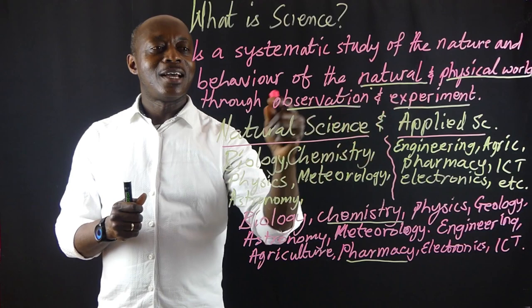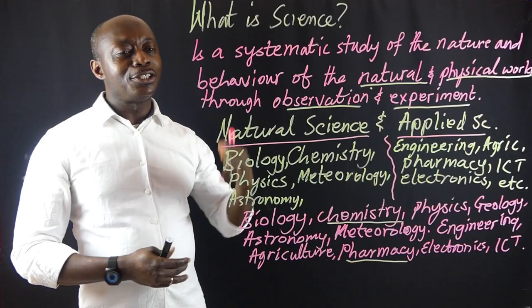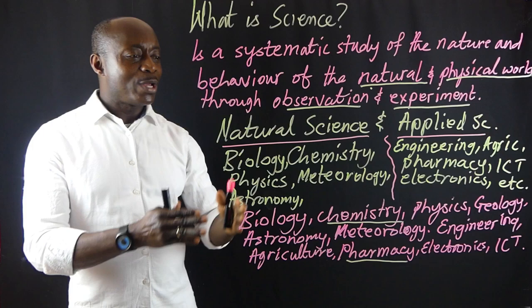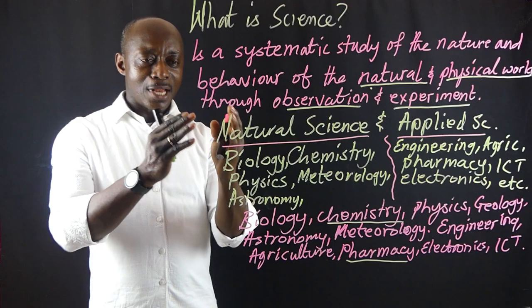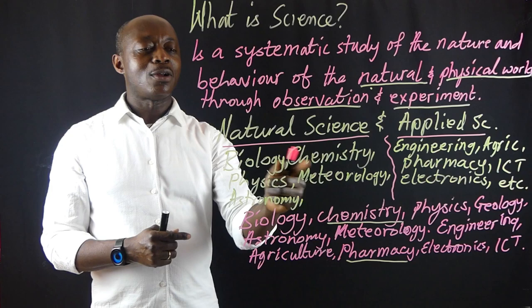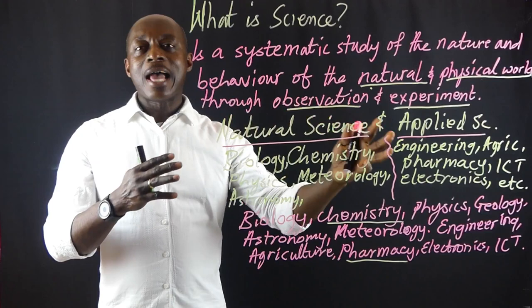Scientific subjects include biology, chemistry, physics, geology, ICT, pharmacy, agriculture, electronics, and so on. These are areas of science. We can group these areas into natural science and applied science. The natural sciences include biology, chemistry, physics, meteorology, astronomy, and so on. The natural sciences deal with the physical world, whereas the applied sciences simply refer to the practical application of scientific knowledge from the natural sciences.